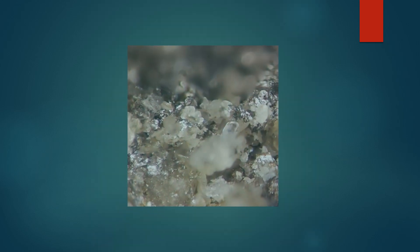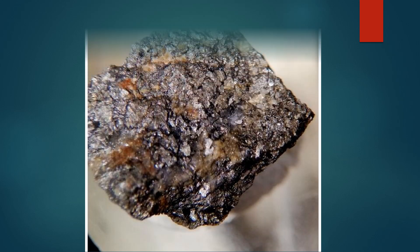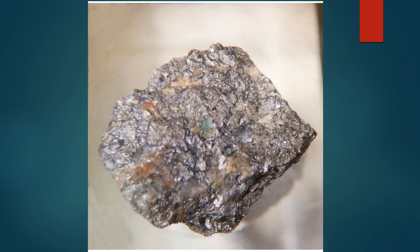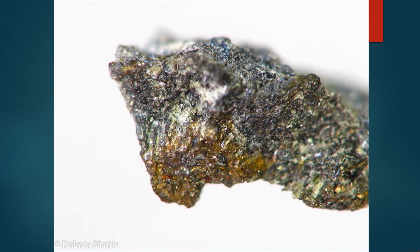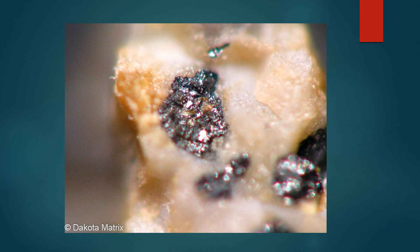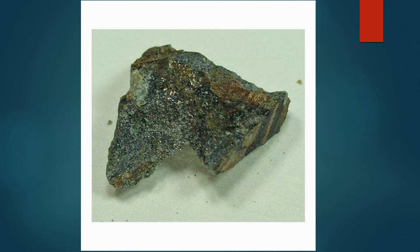Distribution: maldonite is a rare mineral typically found in gold mines containing bismuth minerals, such as in Australia, Russia and certain regions of Austria. The name maldonite originates from the town of Maldon in Australia, where it was first discovered. Extraction and processing: due to its bismuth content, maldonite requires specific processing techniques — often chemical methods and thermal treatment — to separate the gold from the compound. Maldonite is primarily mined for gold recovery and occasionally for bismuth. Bismuth, a less common metal with various industrial and medical applications, also adds economic value to maldonite.